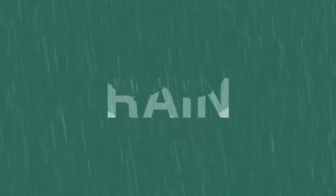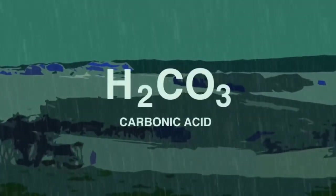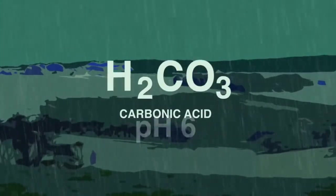Firstly, it's important to understand that rain is naturally slightly acidic. Whilst falling to the ground, the rain dissolves carbon dioxide from the atmosphere to form carbonic acid, a weak acid giving natural rain a pH of 6.